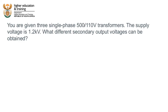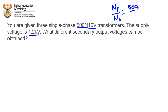We are given three single-phase 500-to-110 volt transformers — that is essentially the turns ratio. The supply voltage is 1.2 kilovolts. The question asks: what different secondary output voltages can be obtained? The 500-to-110 voltage specification is just another way of writing the turns ratio, meaning the turns on the primary to the turns on the secondary equals 500 divided by 110. If you ever see a transformer given this way, it's simply the turns ratio between primary and secondary.